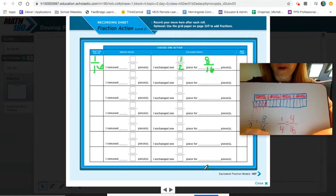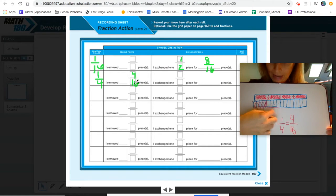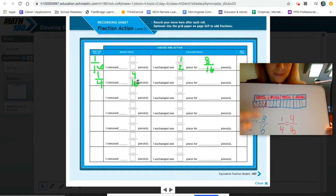So if I record this on here, I rolled one fourth. And I removed four sixteenth size pieces, which is equivalent to one fourth. Meaning that I now have this amount left to still remove in the game.